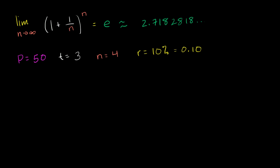Let's write it out. $50 — that's your principal — and you're going to multiply that, you're going to compound it. Each period, each of these three times four periods: you have three years, each of them divided into four sections, so you're going to have 12 periods.